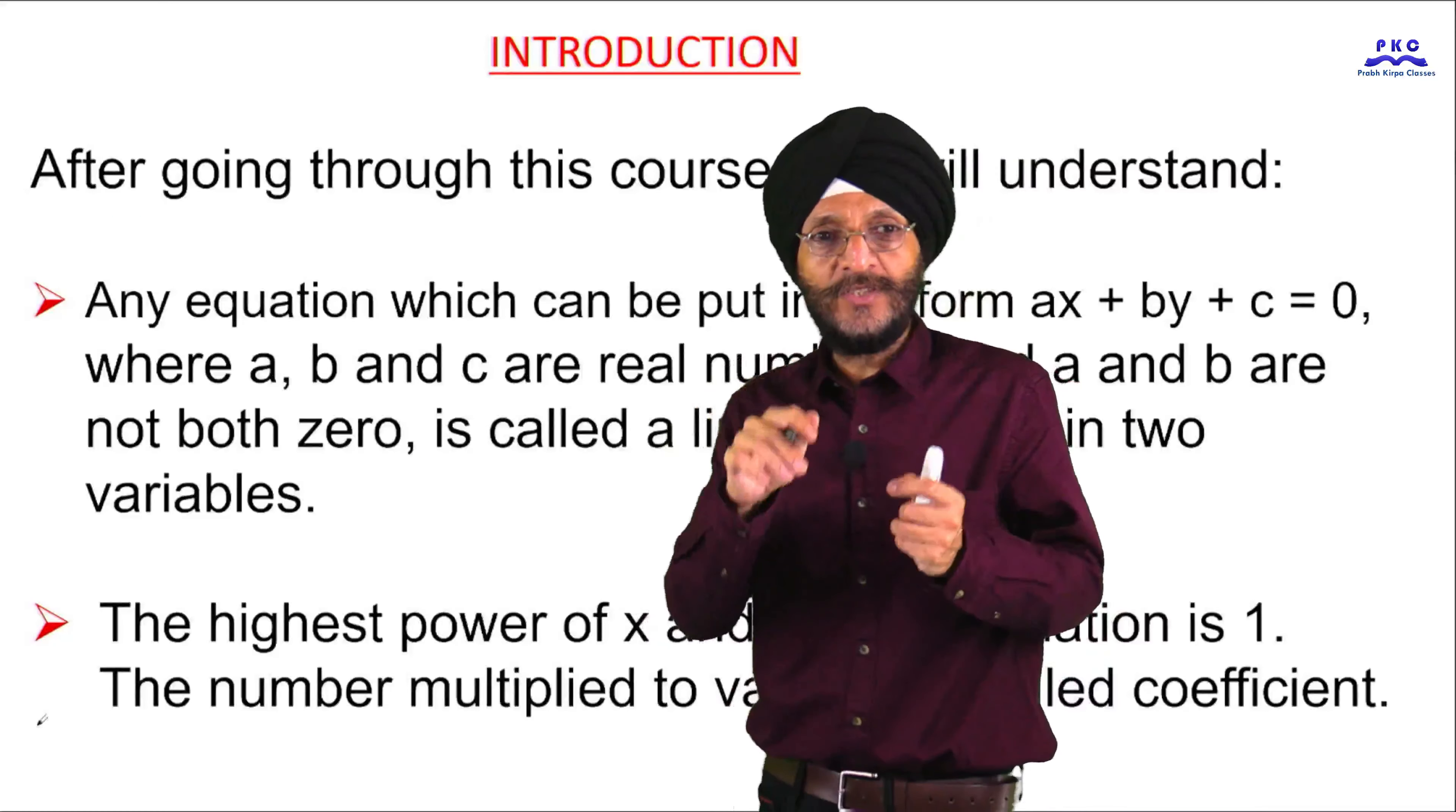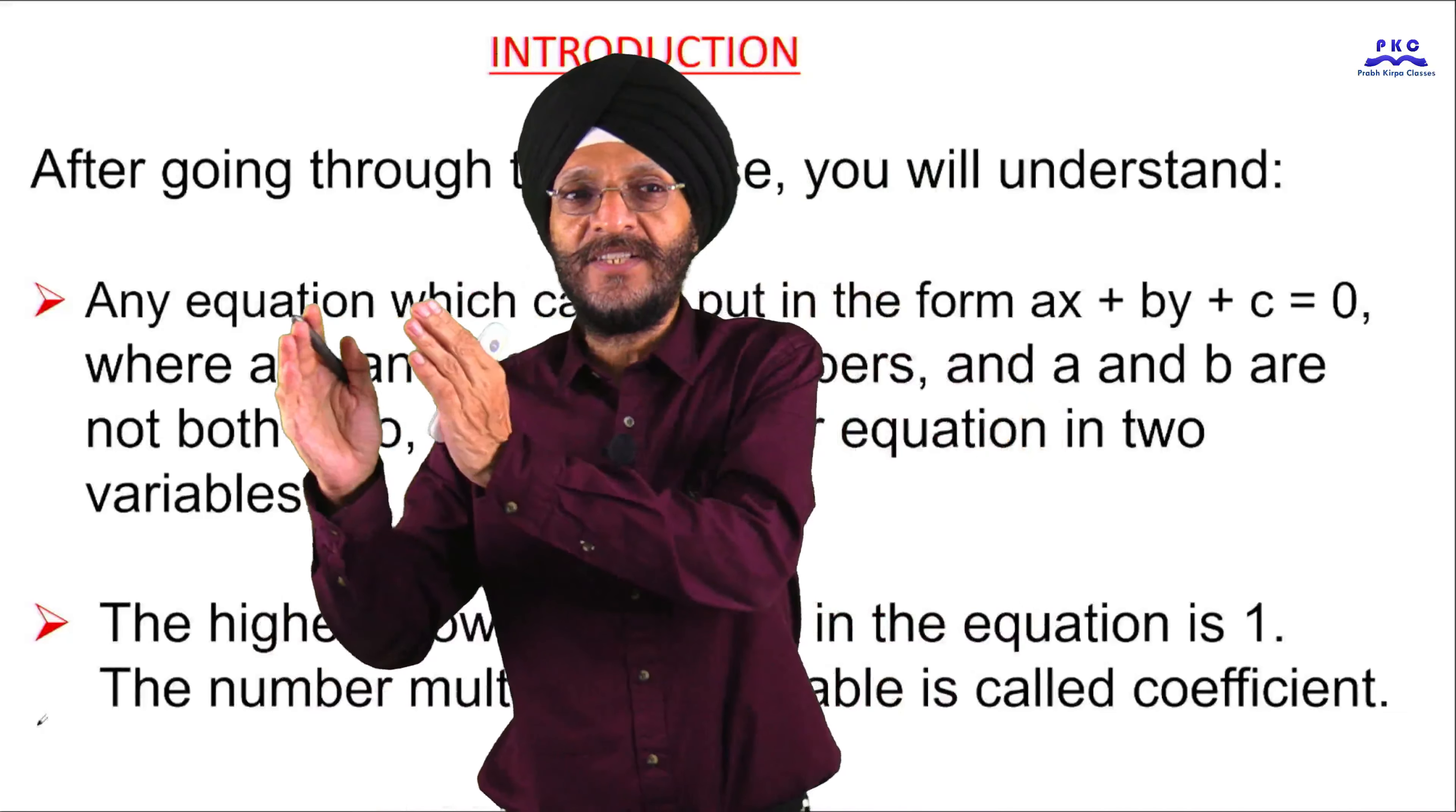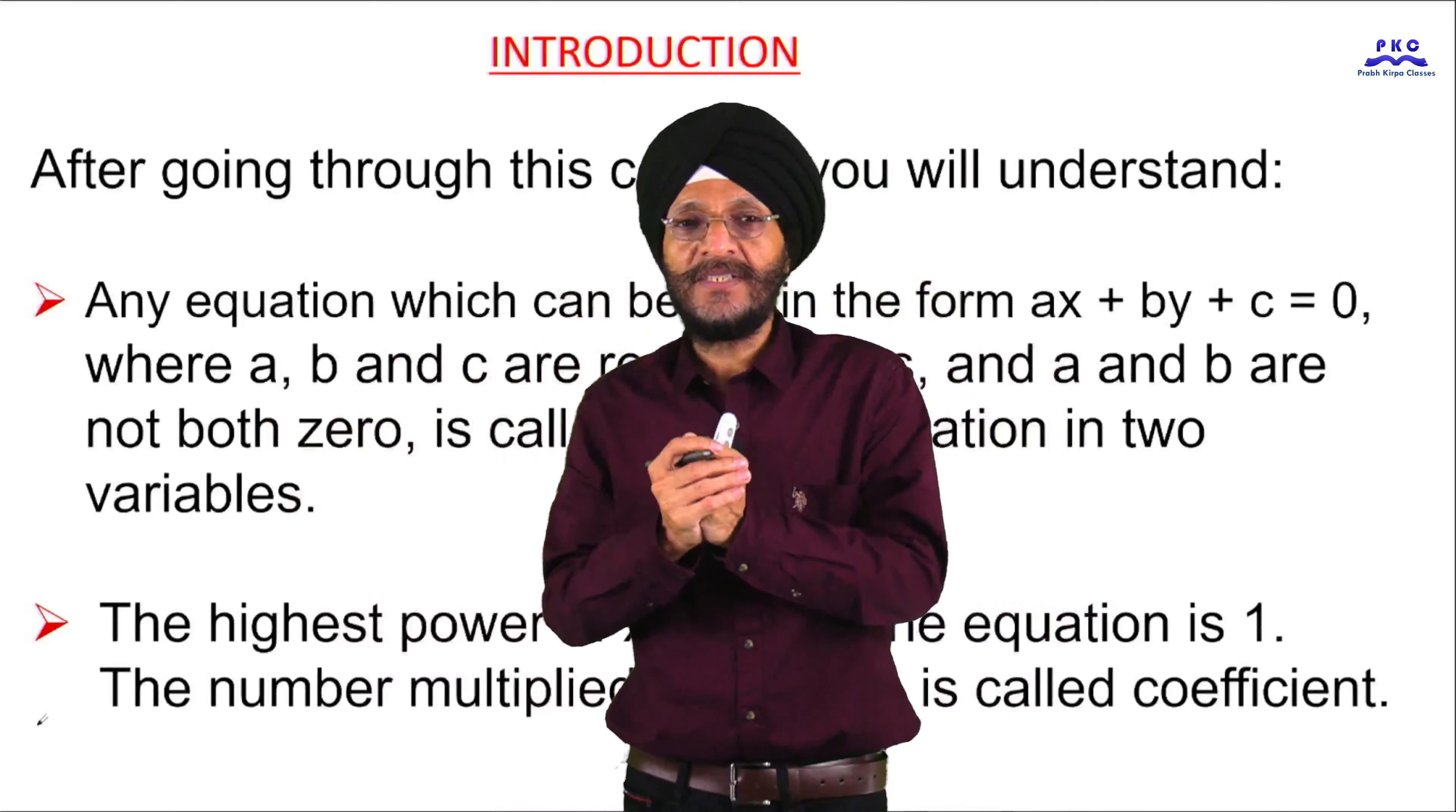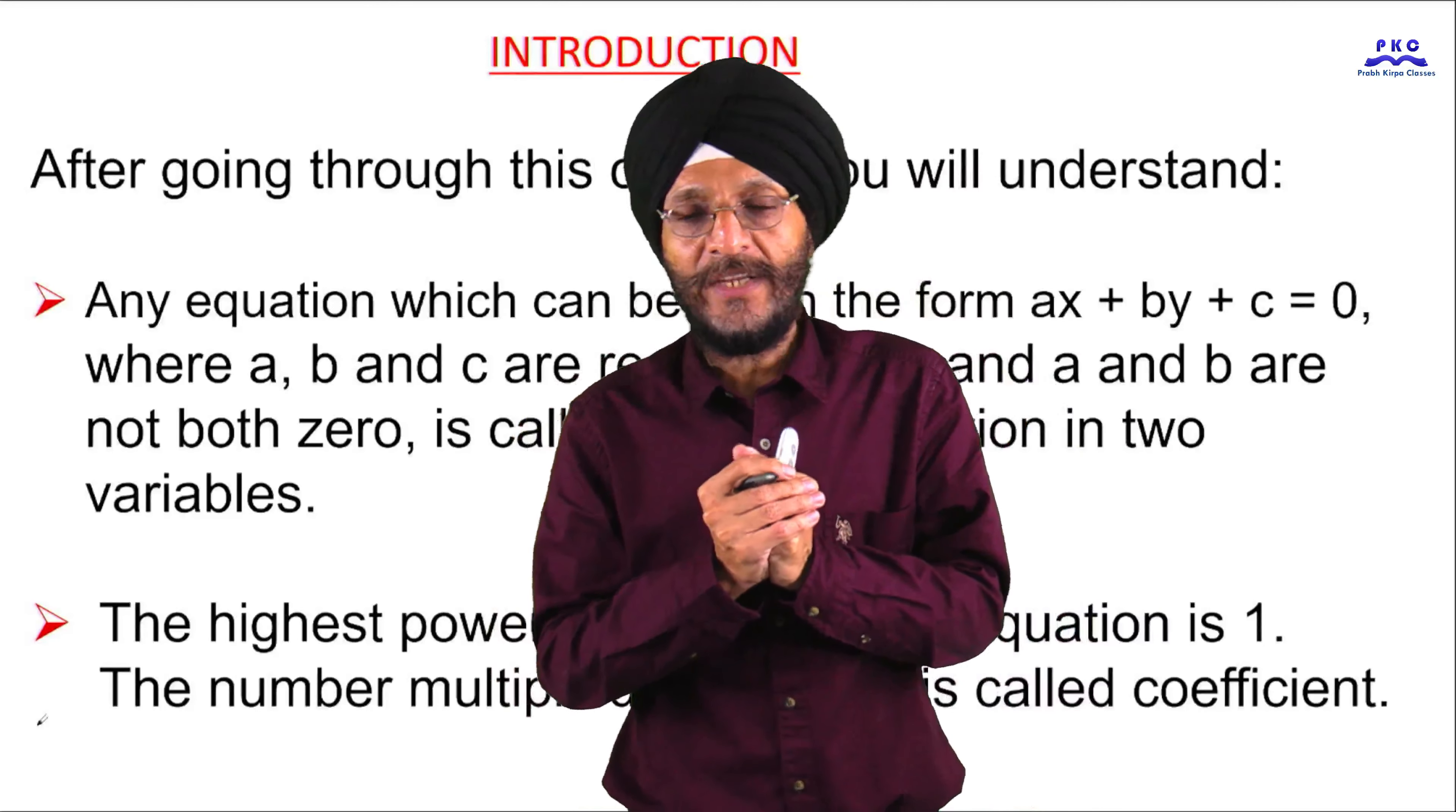Now, after going through this course, you will understand that any equation which can be put in the form Ax plus By plus C is equal to 0, where A, B, C are real numbers and A and B are not both 0, is called a linear equation in 2 variables.